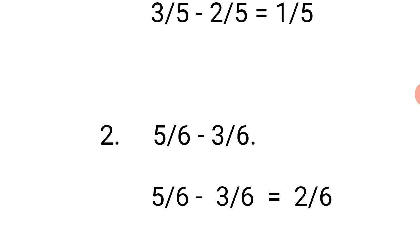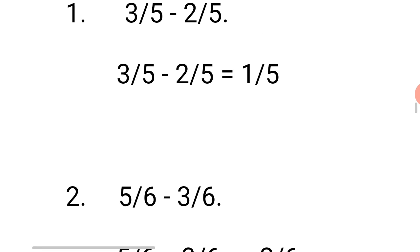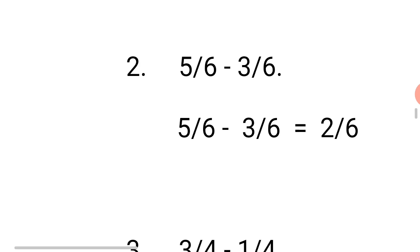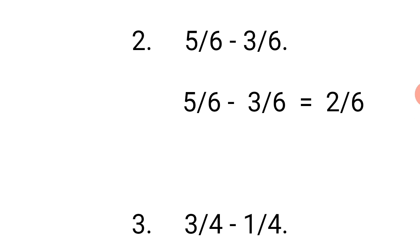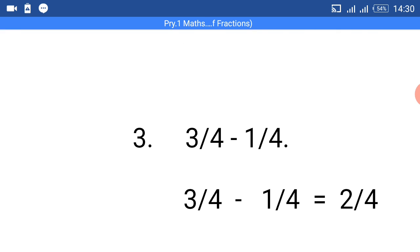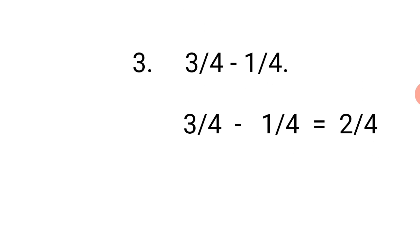Look at number 2. In number 2, we also have the same denominators, so we pick one of them. We count the first numerator, which is 5: 1, 2, 3, 4, 5. Then we take away 3: 1, 2, 3. Count the remaining: 1, 2. Our answer equals 2, so we pick just one 6. Our final answer is 2 over 6. The same thing in number 3: 3 over 4 minus 1 over 4. Count 3, take away 1, write your answer, then pick one of the denominators. Our answer in number 3 equals 2 over 4.